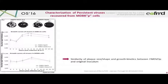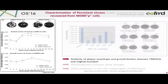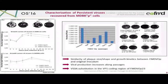We initiated characterization of the virus recovered from MDBK cells by performing growth kinetics curves and observing similarity of plaque size, shape, and growth kinetics between the original inoculum and the persistent virus. In the duplicate assay we observed the same tendency — no differences in shape or size of plaque — and viral production increases along passages, then we lose persistence.